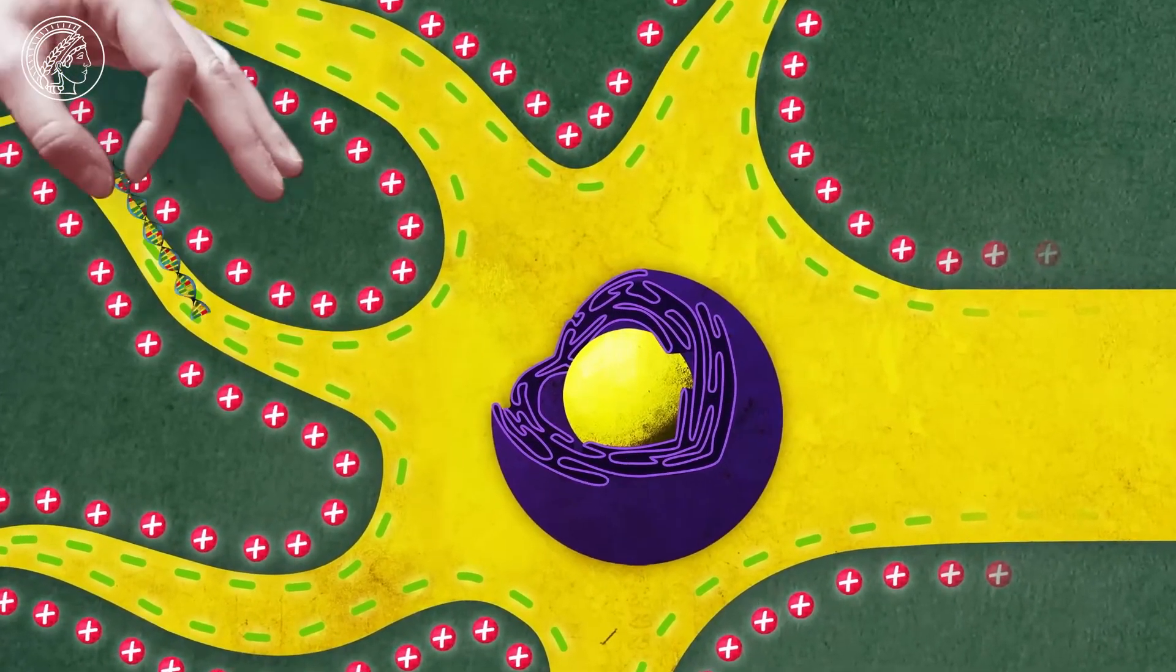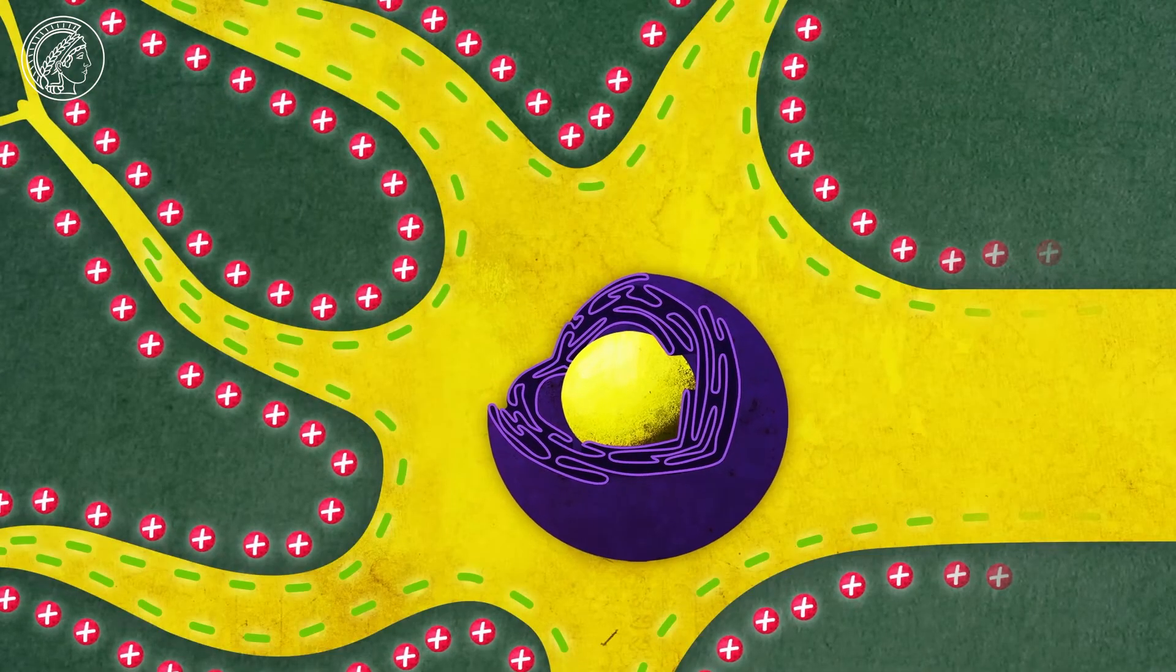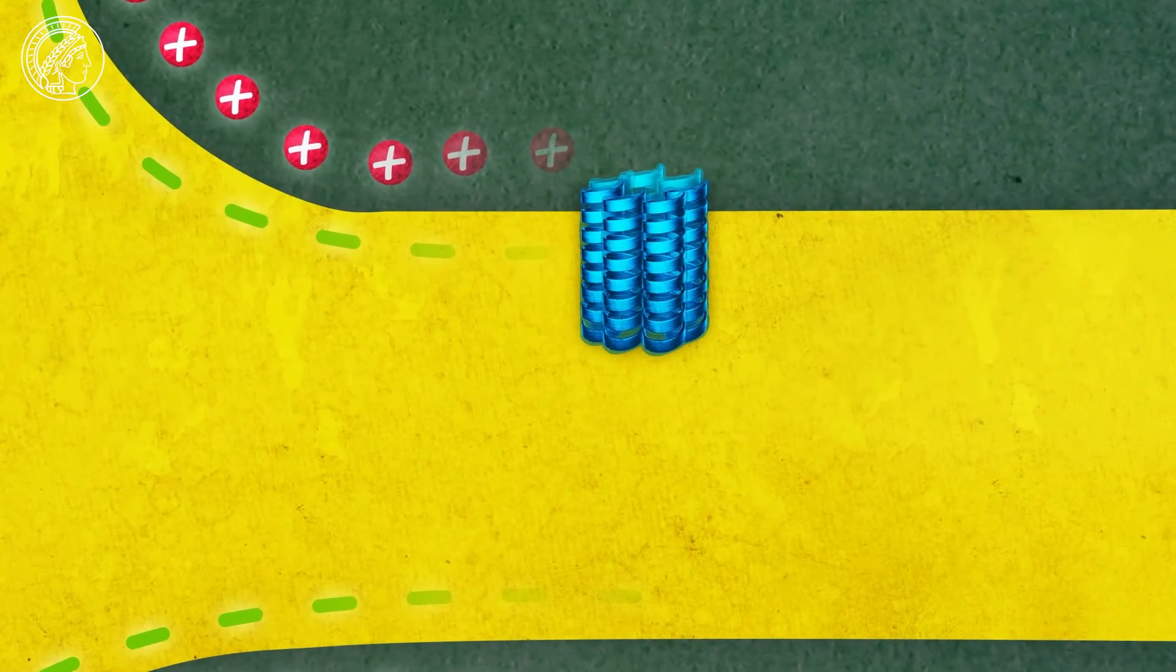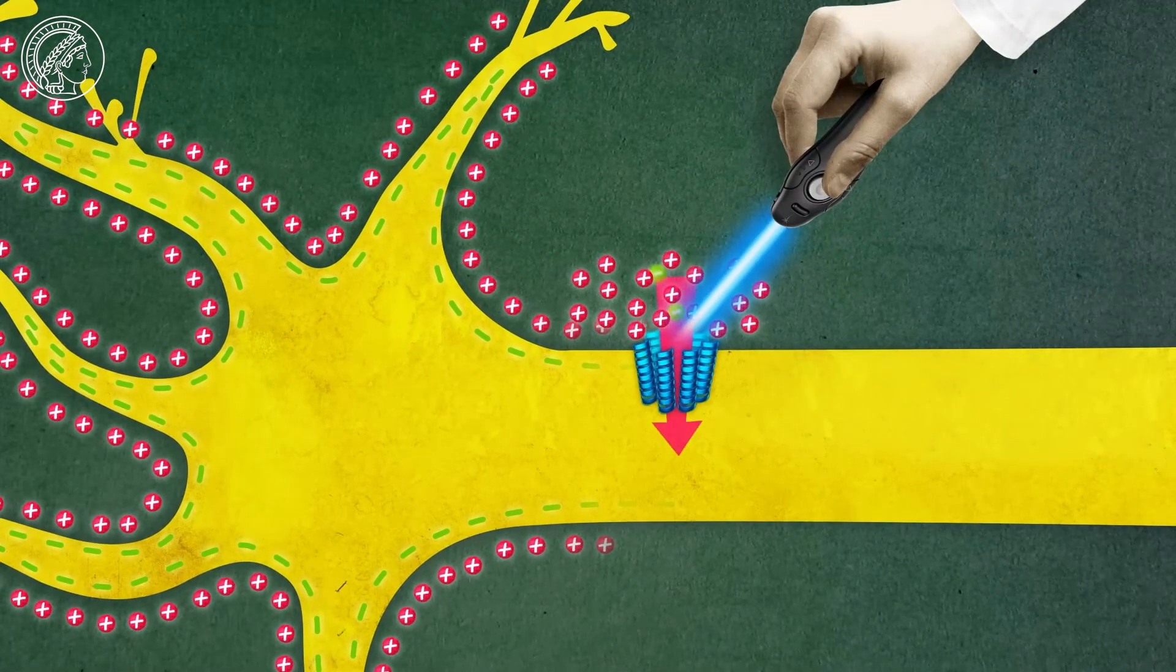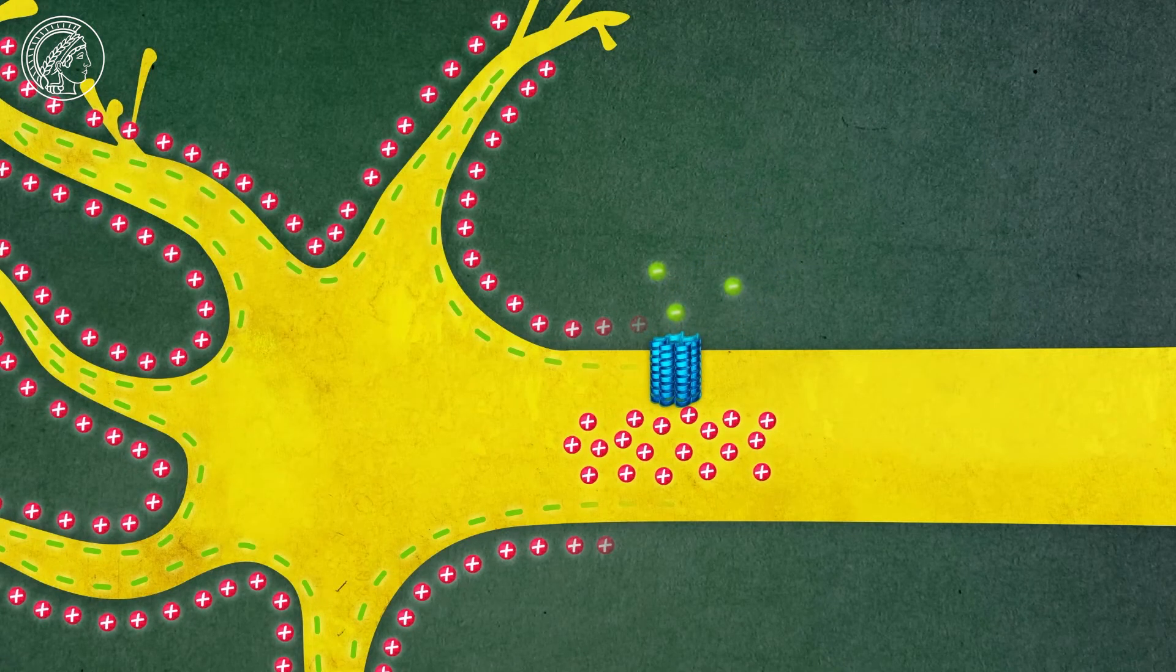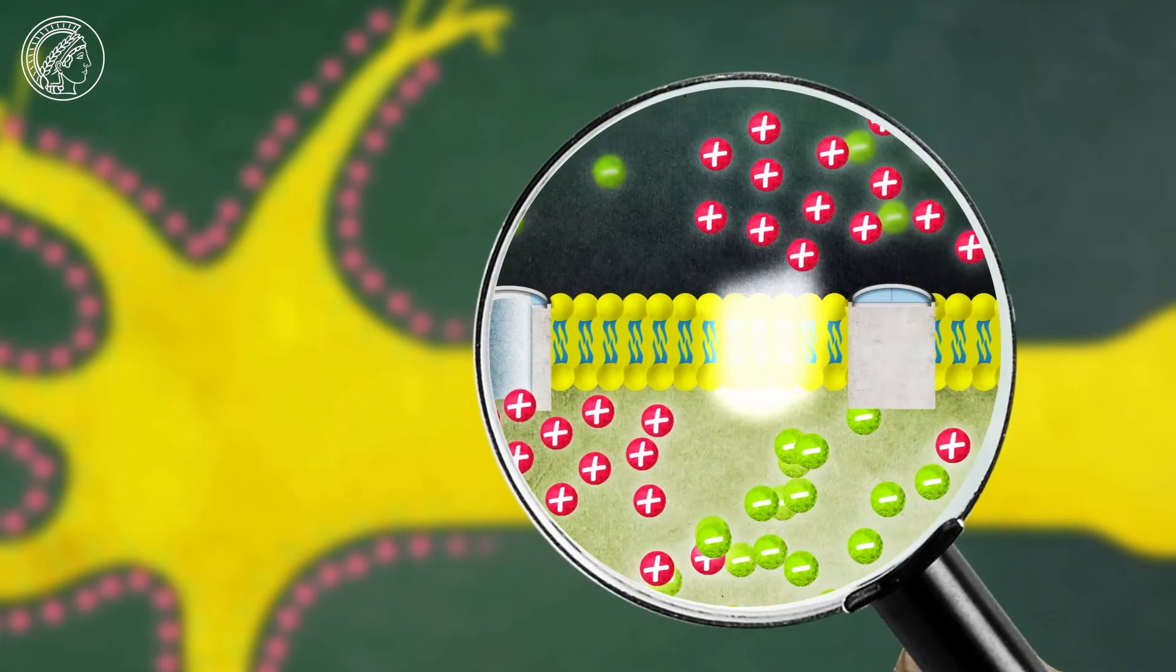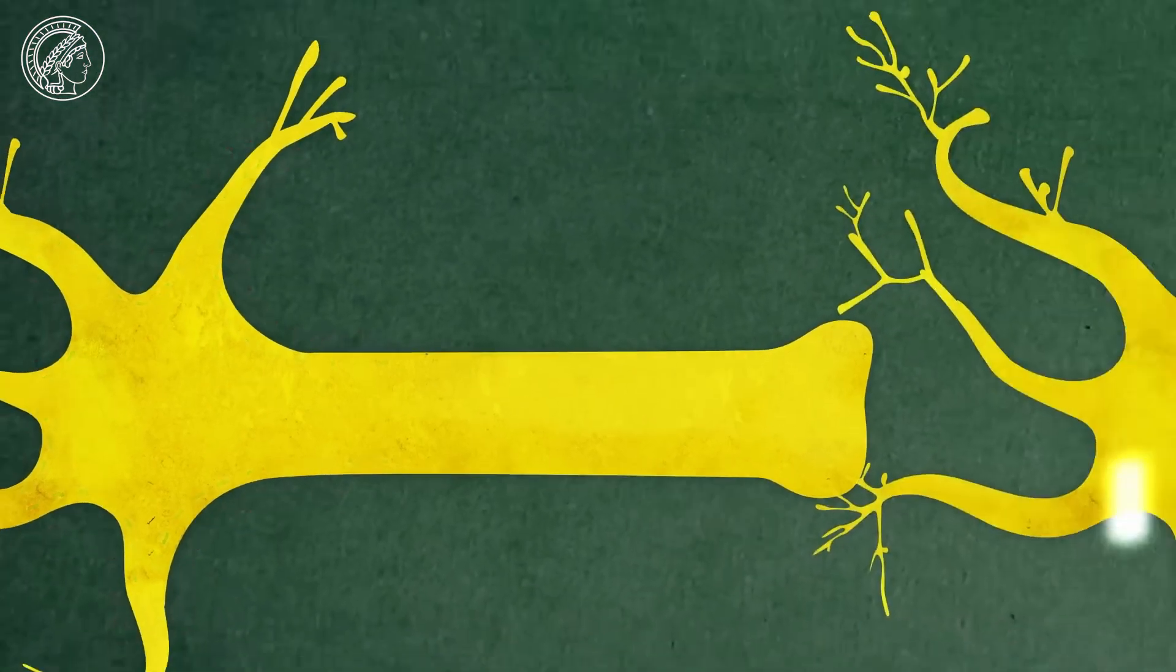Optogenetics scientists use this mechanism by smuggling the gene with the building instructions for the channel rhodopsin into the genetic material of the nerve cells, so that this channel can then work inside the membrane. If it is stimulated by light, positively charged ions flow into the cell. This changes the tension across the membrane and the neighboring original channels also open up. In this way, the cell is depolarized and an action potential arises.